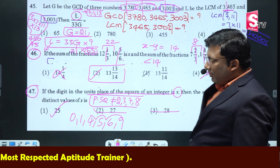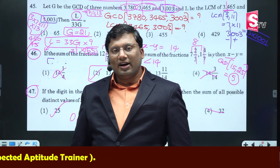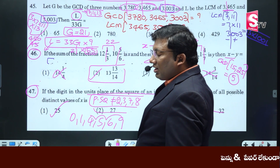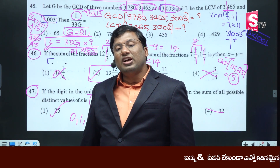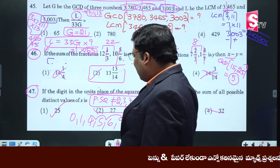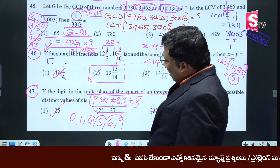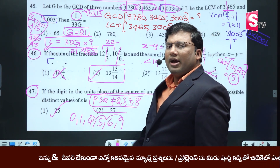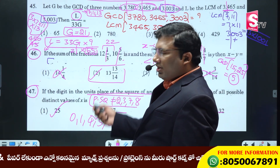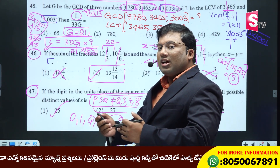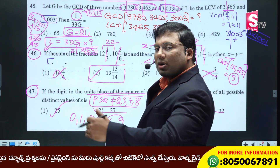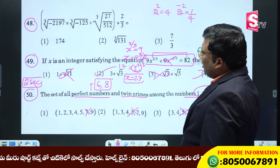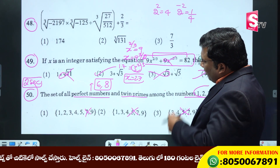Are you all with me? Write: perfect square unit digits cannot be 2, 3, 7, 8, 9. The possible unit digits are 0, 1, 4, 5, 6, 9. The answer is 25. Write the beautiful way of solving — I have the answer. This is a concept-based question. The answer is 45.